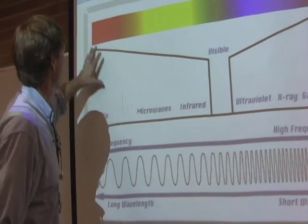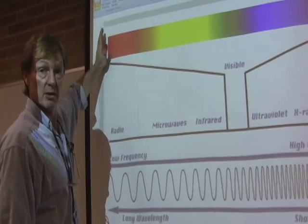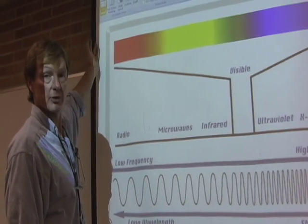Other animals, snakes for example, some see in the infrared. They see below the red at lower frequencies in the red.